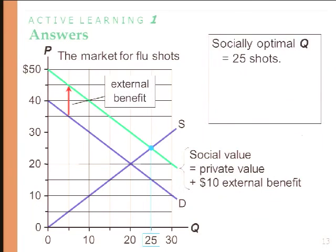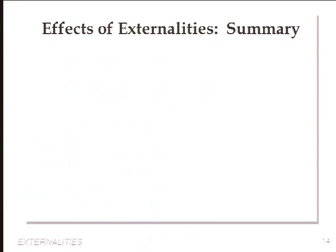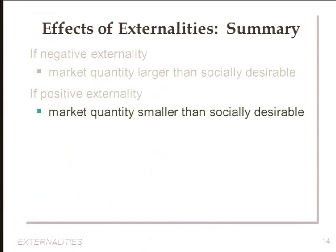To summarize: if there's a negative externality, the market quantity is larger than socially optimum because there are costs being neglected by the sellers. If it's a positive externality, the market quantity is smaller than socially optimum. The event here is offering a subsidy for a positive externality or imposing a tax for a negative externality — that is internalizing the externality. Tax goods with negative externalities, subsidize goods with positive externalities.